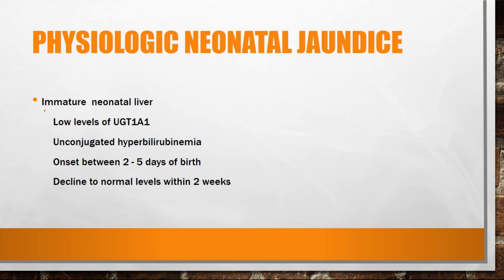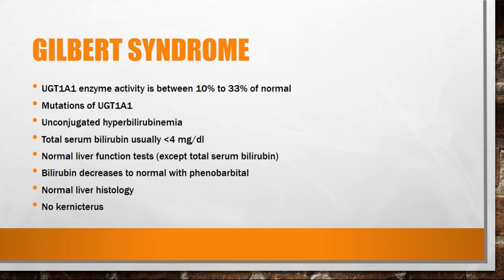The first cause is physiologic neonatal jaundice. This is due to the immature neonatal liver — the liver of the neonate is not mature enough to excrete bilirubin because it has low levels of UGT1A1. So the level of unconjugated bilirubin increases, which is known as unconjugated hyperbilirubinemia. This is seen within two to five days of birth and declines to normal levels within two weeks. It can be treated by phototherapy.